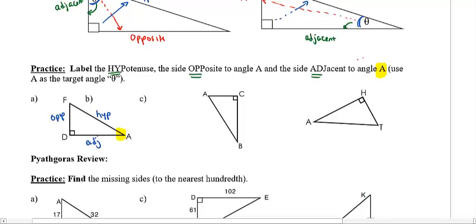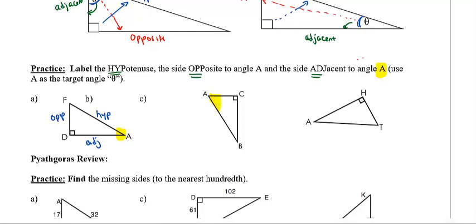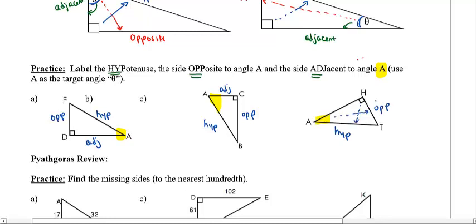Now your job is to do the next two — you should be pausing the video. Here are the answers. Hypotenuse is the longest side, always across from the right angle. Opposite is across from the target angle. Adjacent is next to the target angle. Same thing for the last one: hypotenuse across from the right angle, opposite across from the target angle, and finally adjacent.